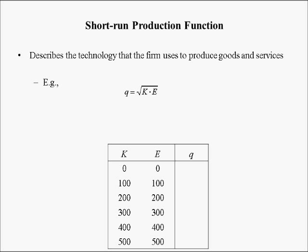In the previous lecture video, utility was equal to the square root of consumption times leisure. We're going to use that same simple function, only this time replacing U with output Q, C with K (capital), and L with E (employment).